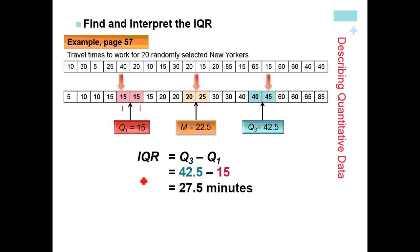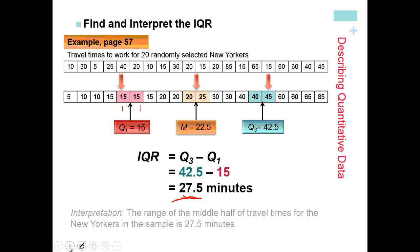Now, the IQR is not 15 to 42.5 — that's a very common mistake. The IQR is one single number. You subtract: 42.5 minus 15 = 27.5. That is the IQR. We'd interpret this as: the range of the middle half of travel times for New Yorkers in this sample is 27.5 minutes. That tells you how spread out the data is.